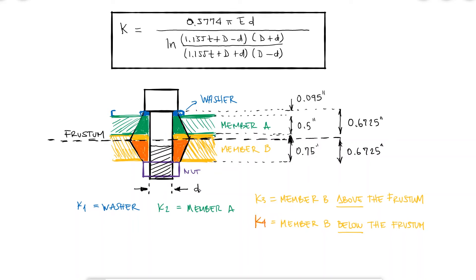Lowercase d will be the same for all k's, still the major or nominal diameter of the bolt, but the outer diameter, capital D, will change for each k. For k1 and k4, capital D will be the diameter of the bolt head and the nut, respectively, let's say 0.75 inches for both.